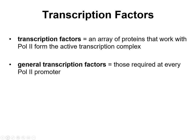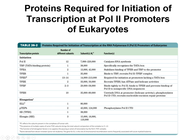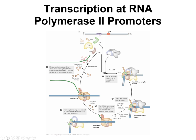The sigma subunit in E. coli is analogous to transcription factors in eukaryotes because it helps direct the polymerase to the promoter. In eukaryotes, we have a wide variety of transcription factors that work with Pol II to activate the whole complex. There are general transcription factors required at every Pol II promoter, plus specific ones at particular promoters. We're going to focus on the general transcription factors here.